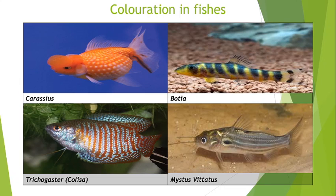Second, if we talk about Botia, Botia has black bands against yellow background. You can see here black bands against yellow background. Then in Kolesa there are 14 orange color bands.